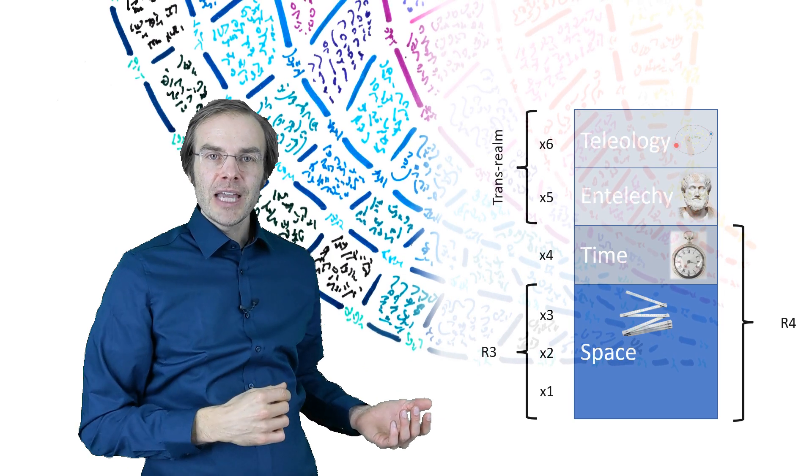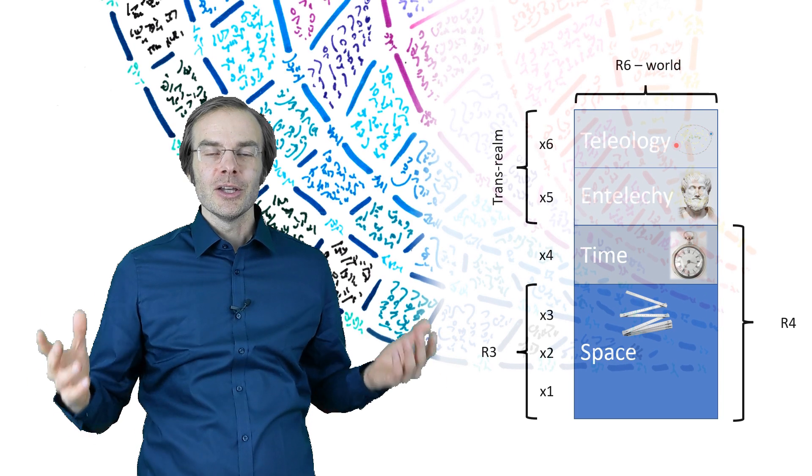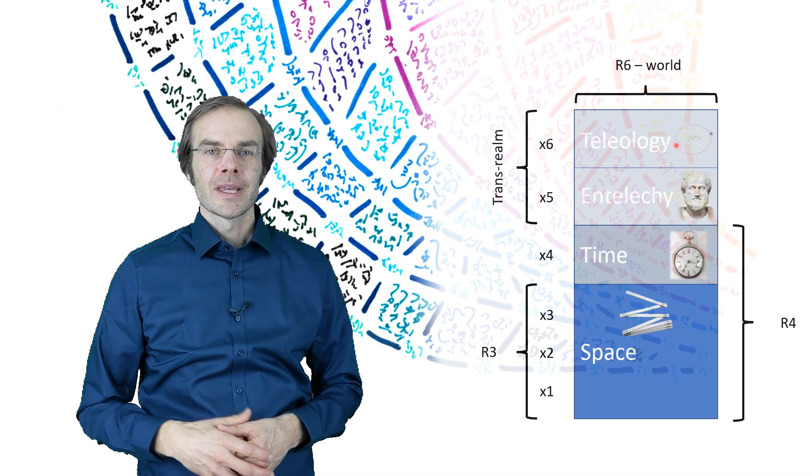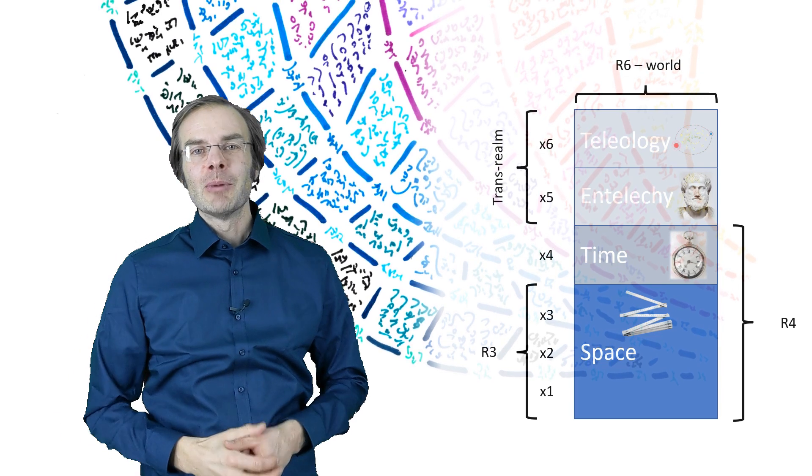And all six dimensions together he called the R6 or simply the world, meaning the entire entirety of the world. And now the question is, what holds this world together at the innermost?